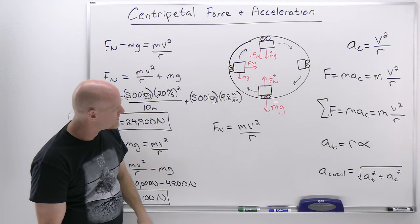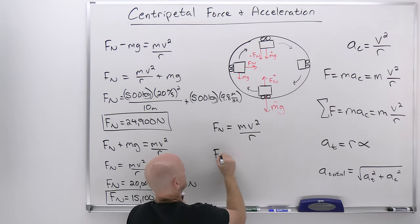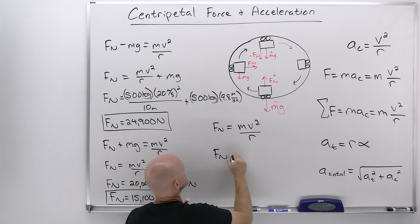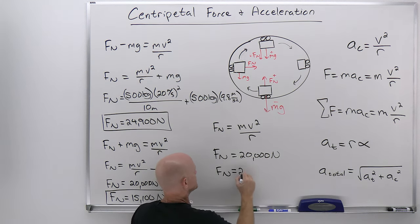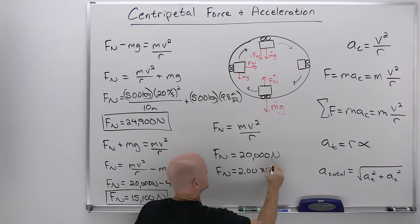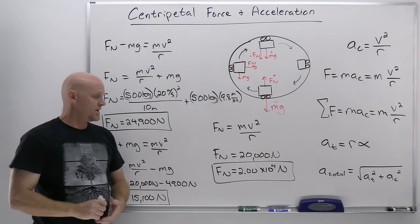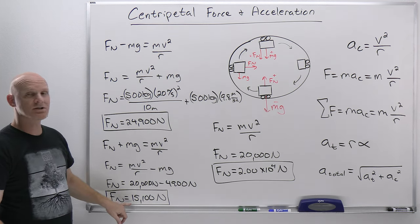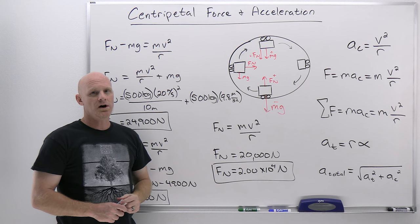For the sides, the normal force adds up to mv²/r: 500 kilograms times 20 meters per second squared over 10 meters, which comes out to 20,000 newtons. To three sig figs, that's 2.00 × 10⁴ newtons. So comparing all three positions: at the bottom 24,900 newtons is the highest, at the top 15,100 newtons is the lowest, and on the sides 20,000 newtons is right in the middle.